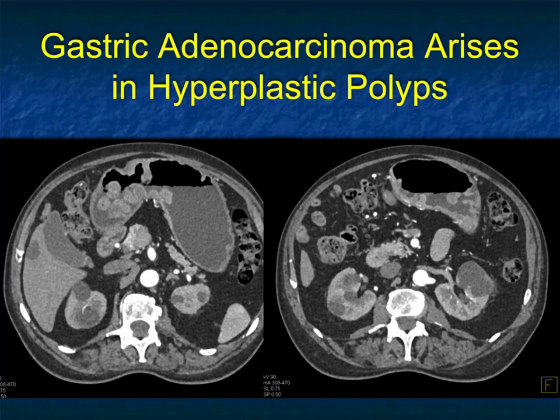You can have hyperplastic polyps — we see them not uncommonly in the stomach. There's always the concern: can they be malignant? Remember certain syndromes — juvenile polyposis has multiple polyps. In this case these were hyperplastic polyps, but if you look at them carefully, particularly in the antrum, they're getting large and look lobular, and they have to be concerning.